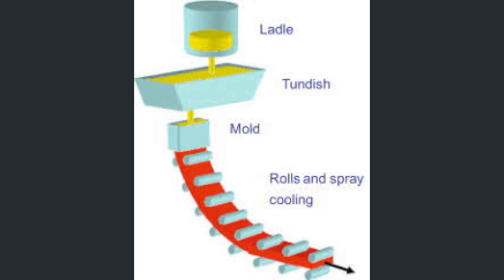The fourth type of permanent mold casting is continuous casting, in which the operations of pouring, solidification, and withdrawal are carried out continuously. The molds are made of copper or graphite and are open at the bottom end to produce castings continuously, converting molten metal into solid metal bars.